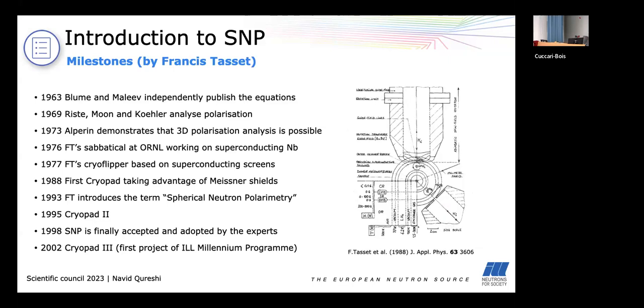So already in '77 back at the ILL he developed the cryoflipper which makes use of superconducting screens. In '88 he presented the first cryopad which takes advantage of Meissner shields. In '93 Francis introduced the term spherical neutron polarimetry in order to clearly distinguish from the longitudinal polarization analysis. And although it took until '98 that SNP was finally recognized and accepted by the experts, he kept on believing in the idea and developed cryopad to a second and a third version.